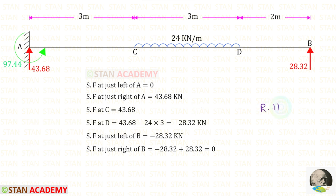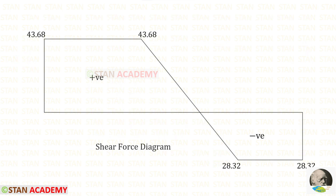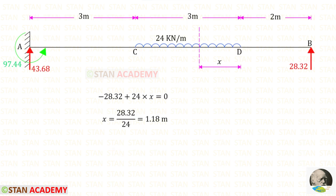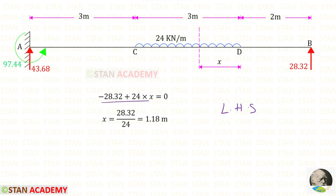Using the right-hand side rule, we can find the shear force values. Here you can see the shear force diagram. At a certain point the shear force becomes 0. Let us make a section at that point and find the distance. I have made a section at a distance of x from point D. Using the left-hand side rule, we write the expression for shear force equal to 0, and solve to get x = 1.18.